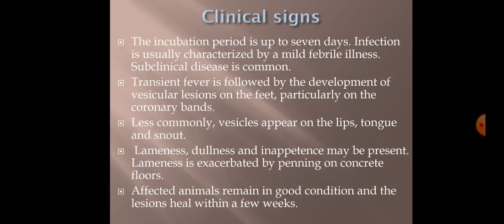Clinical signs of SVD are almost similar to FMD. Incubation period is up to 7 days. Infection is usually characterized by mild febrile illness; subclinical cases are mostly common. Transient fever is followed by development of vesicular lesions on the feet, particularly on the coronary bands. Less commonly, vesicles appear on the lips, tongue, and snout. Lameness, dullness, and inappetence may be present, and lameness is exacerbated on concrete floors. Affected animals remain in good condition and lesions heal within a few weeks.